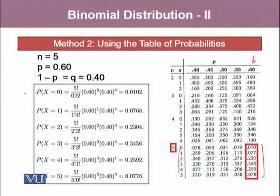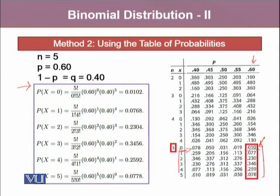When we calculated it using the formula of the probability mass function, probability of X equals 0 turned out to be 0.0102. And calculating it using the table, you will notice that when N is 5, X is 0, the value at P = 0.60, the probability is 0.010. Similarly, for X equals 1, 2, 3, 4, and 5, we have obtained these different probabilities. You will notice that these probabilities obtained using the formula and the table are the same.